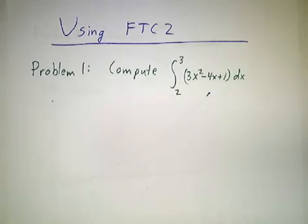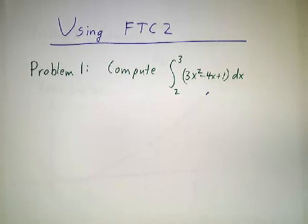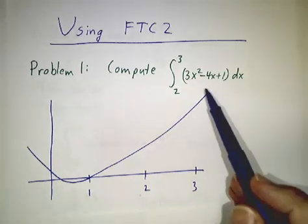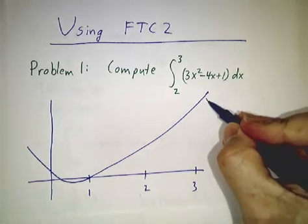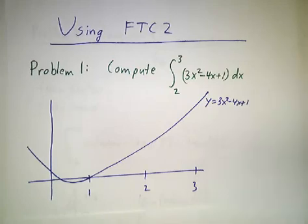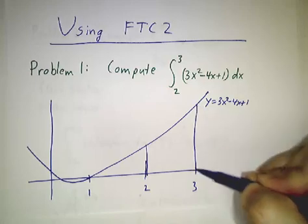The first problem is to compute the integral from 2 to 3 of 3x² - 4x + 1 dx. If you think of this as area under the curve, y equals 3x² - 4x + 1 is a parabola, and we're interested in the area between 2 and 3.